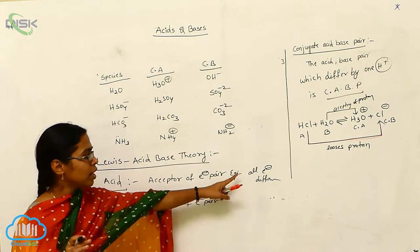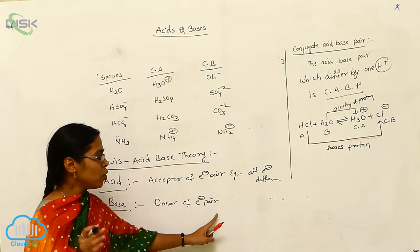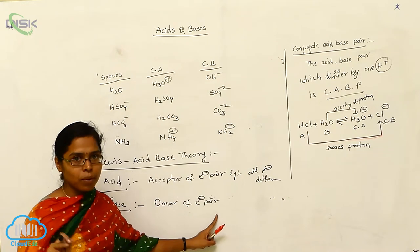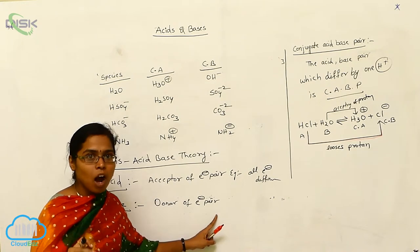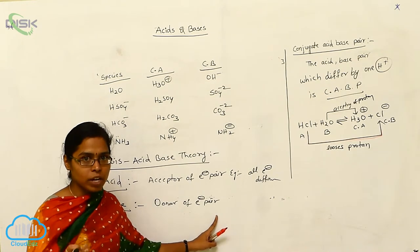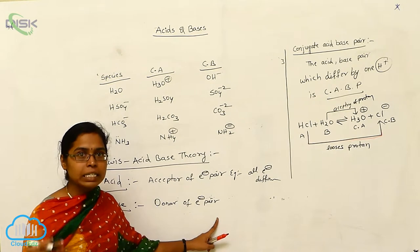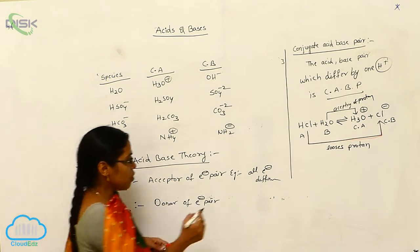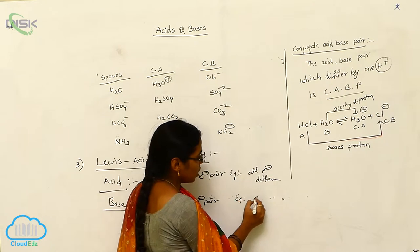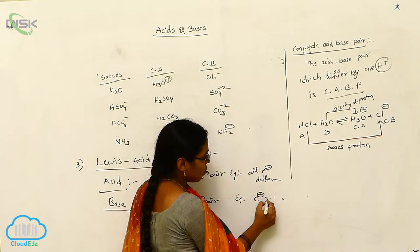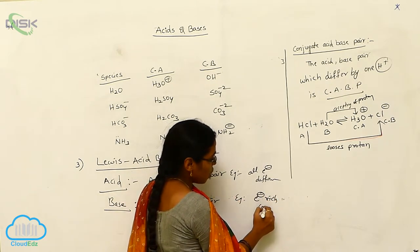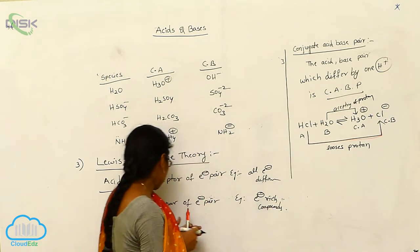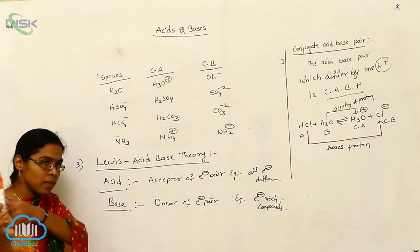Lewis bases are electron rich compounds. The compounds which have high electron density are considered as Lewis bases. Electron rich compounds are considered as Lewis bases.